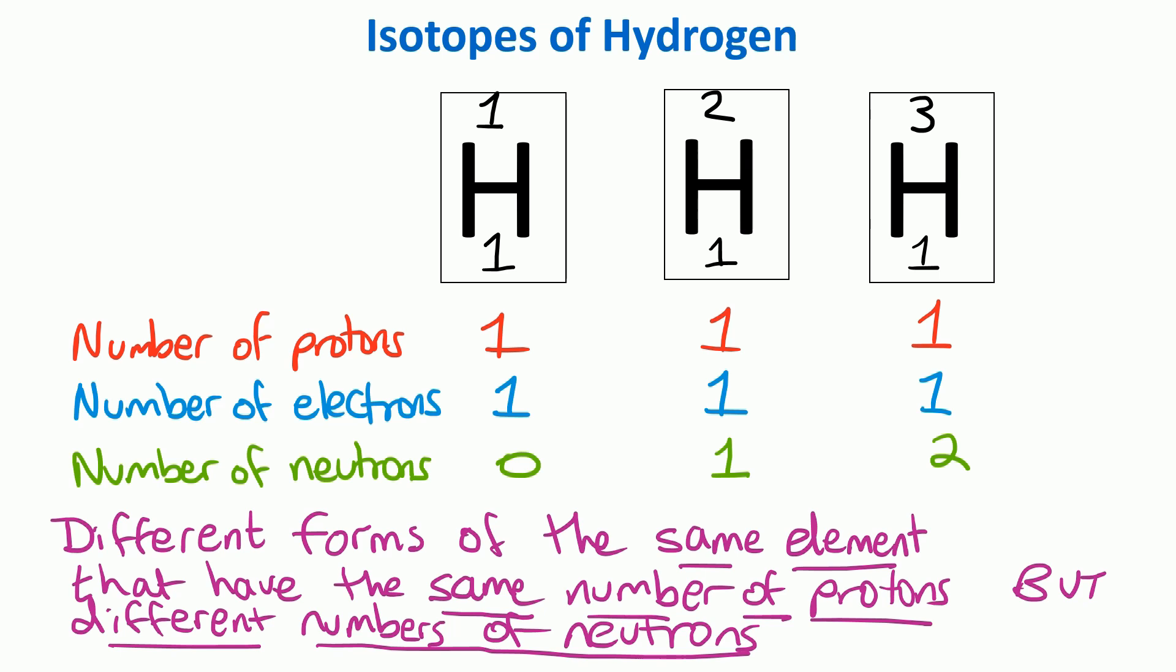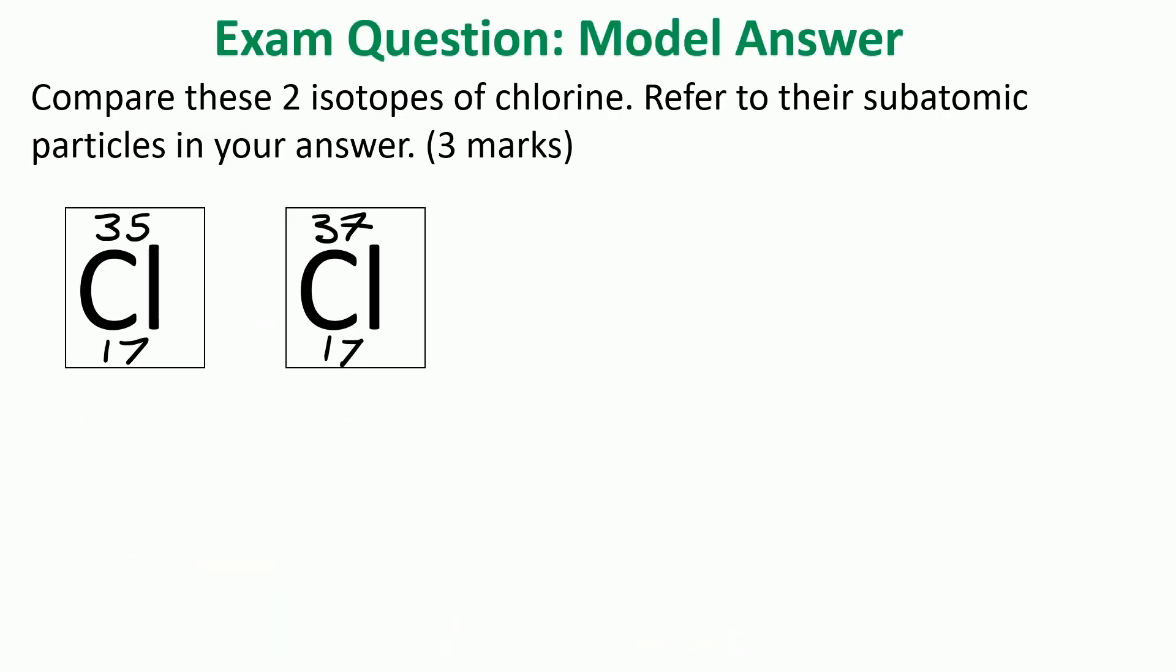Here's a typical exam question that I've seen many times both as a teacher and an examiner, and I'll work through it with you so you can see what you need to write to get maximum marks. The question could be: compare these two isotopes of chlorine and refer to their subatomic particles in your answer. Now the key words here are subatomic particles - protons, electrons, and neutrons.